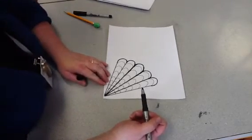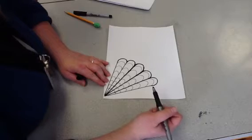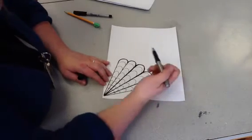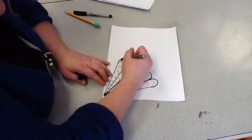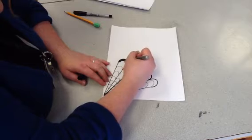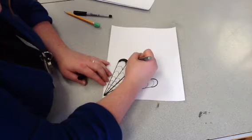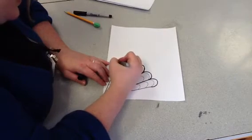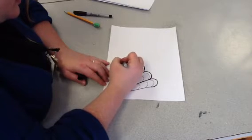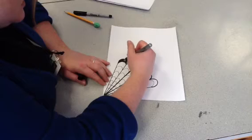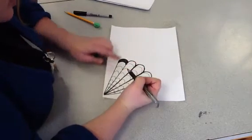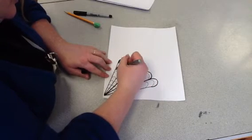I take my Sharpie, and you're going to want to do an every other type of pattern. So if I start on the left with coloring in this section, I'm going to be nice and neat around the edges. Then I'm going to leave the next one white, and then I'll do black.